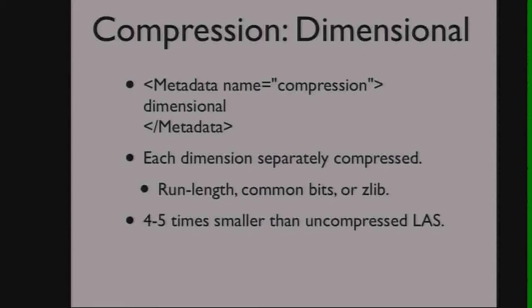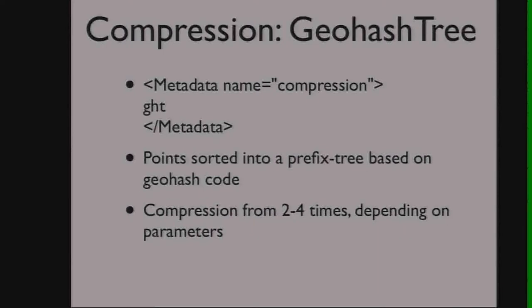Dimensional compression is the default right now. What it does is flip the ordering of the data from point-point-point to dimension-dimension-dimension, and then figures out the best possible compression for each dimension. You can pack 400 to 600 points into a single patch without going over the page size — about a four or five times compression compared to the uncompressed value.